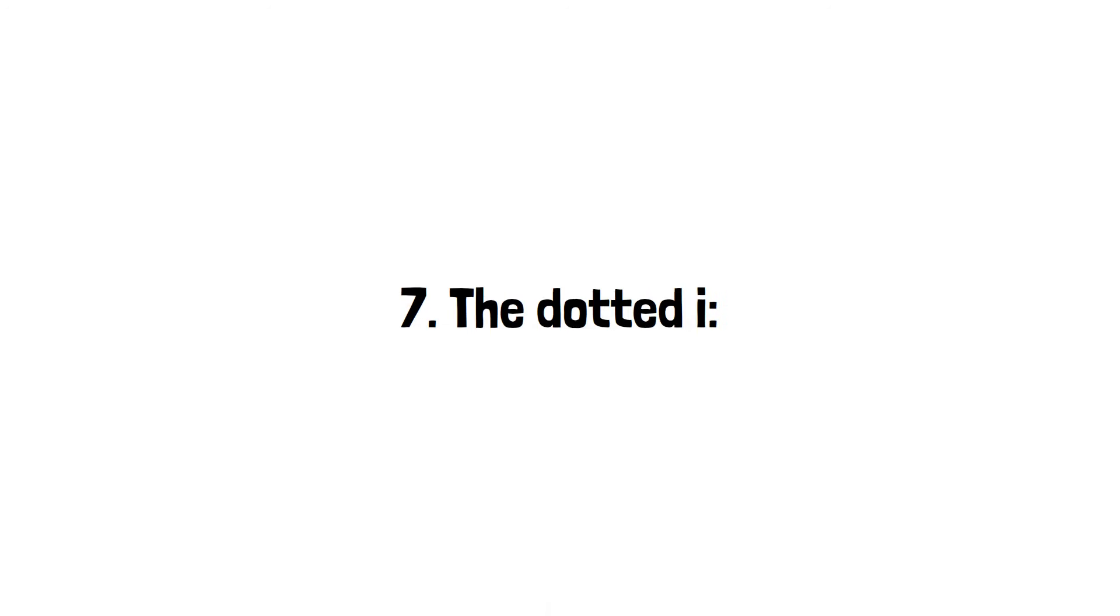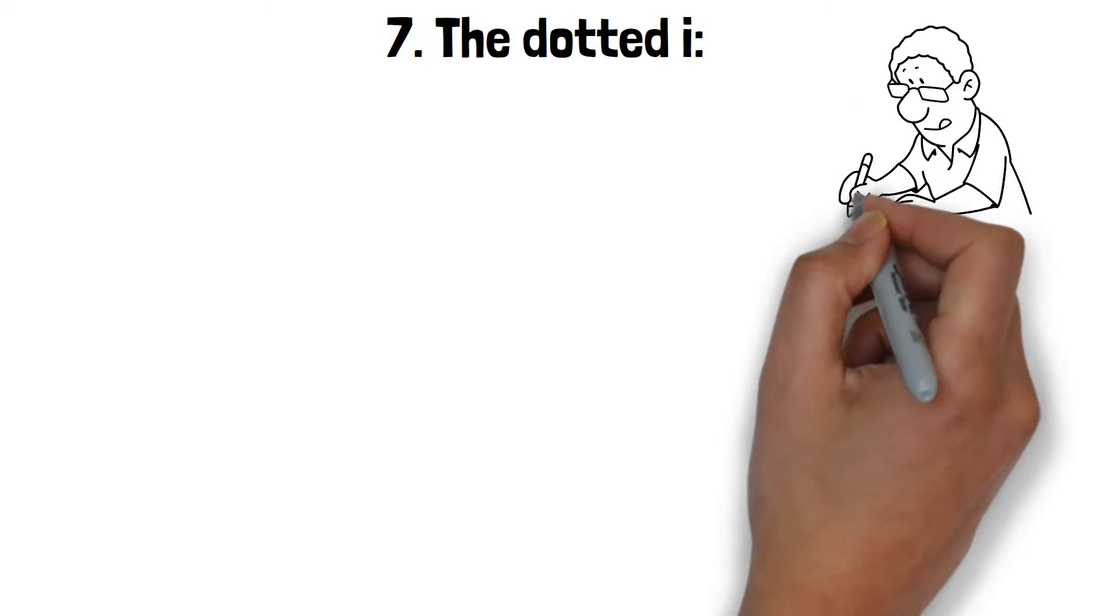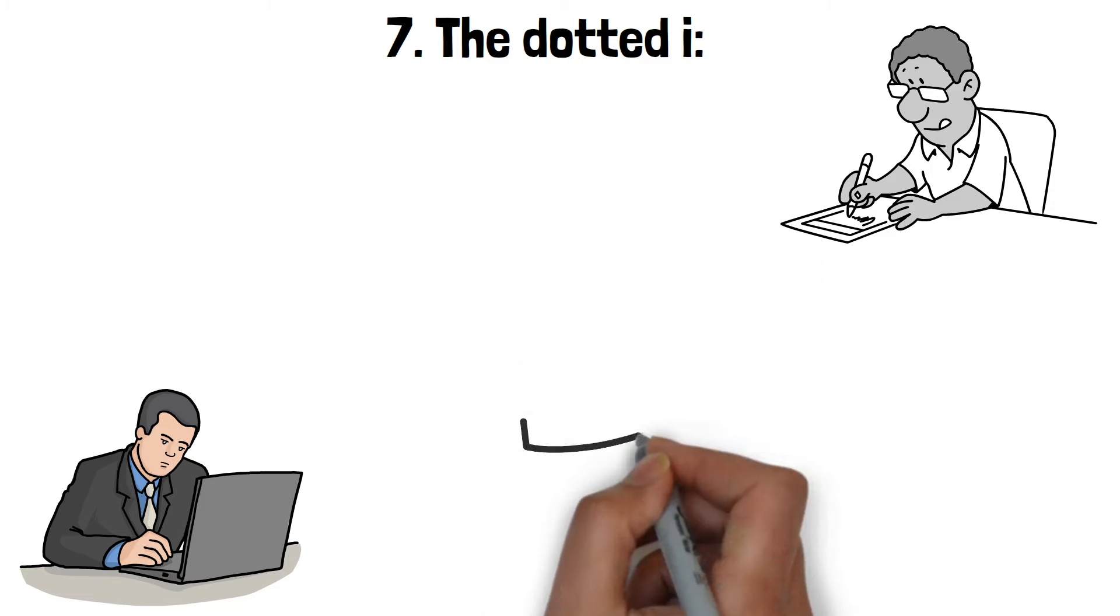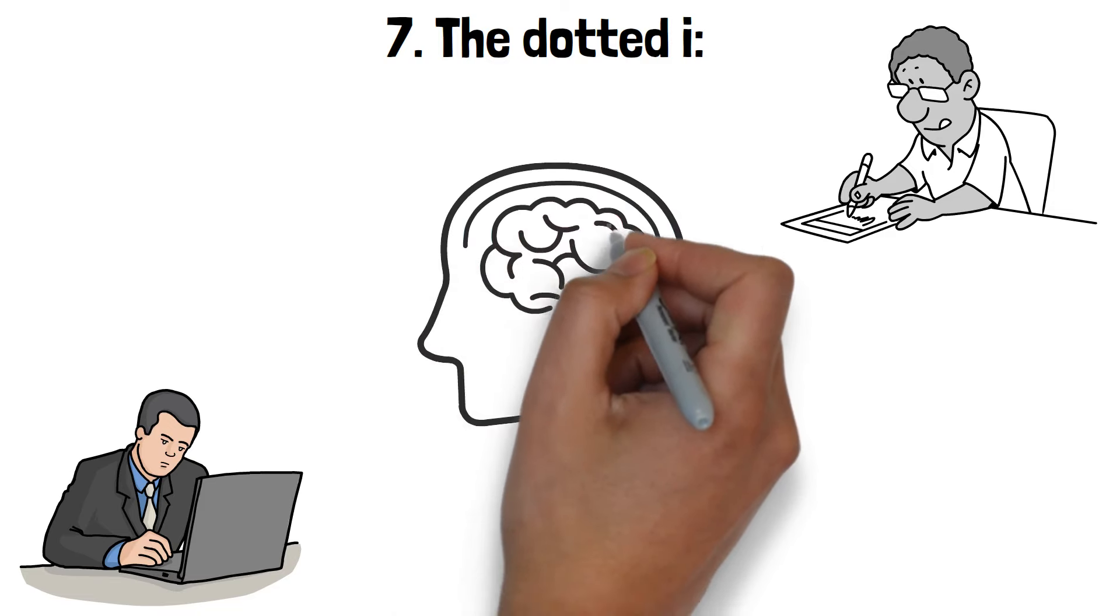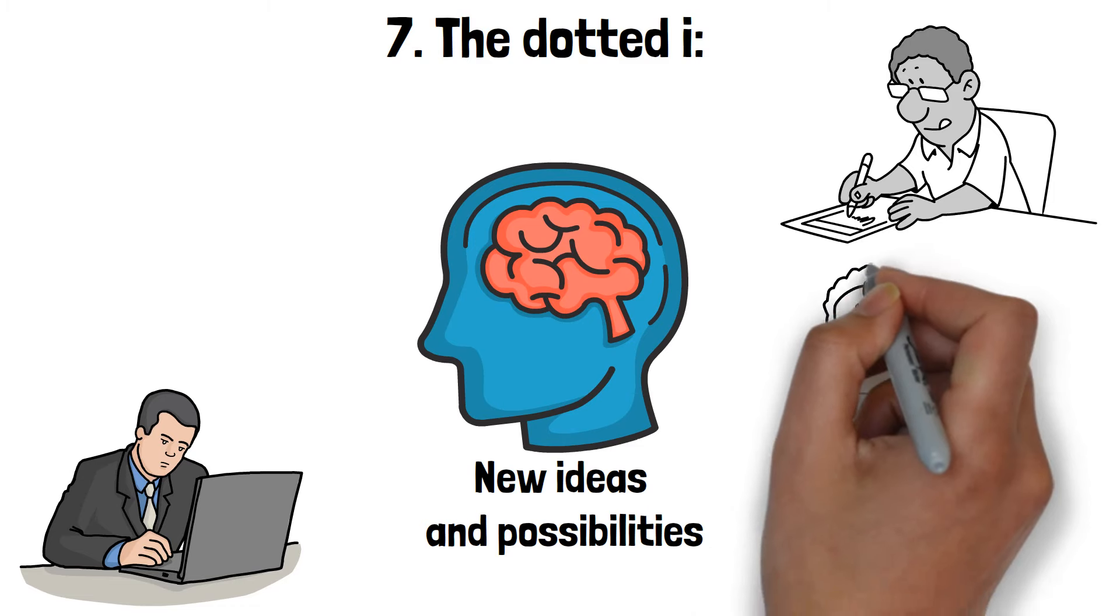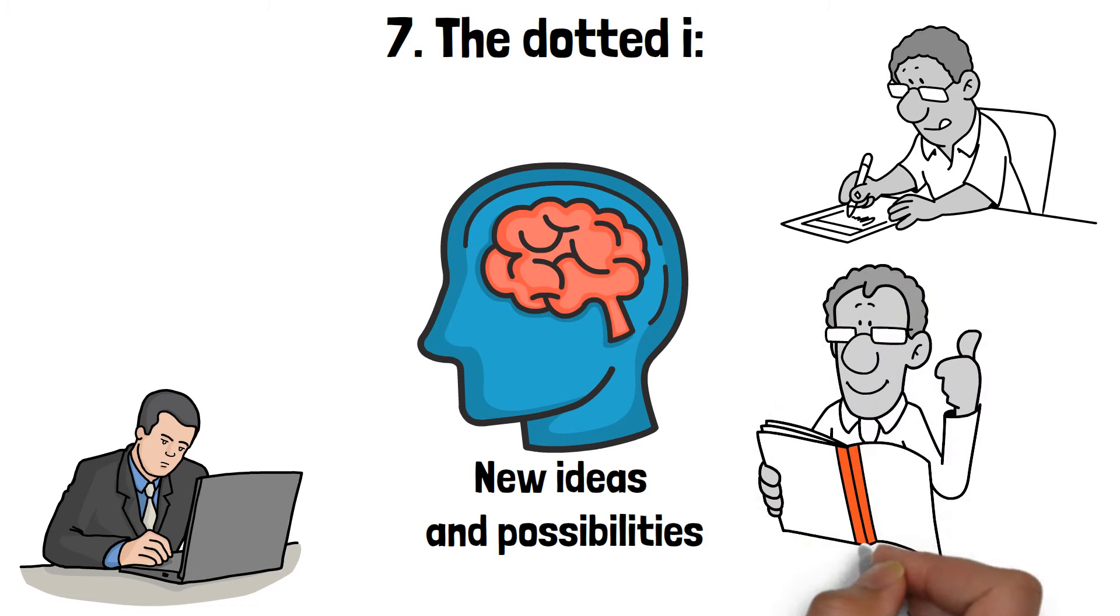The dotted I. Even the way you dot your I can provide significant insights into your personality. A high dot indicates imagination. If you tend to place the dot high above the letter, it suggests that you have a creative and visionary mind. You are likely to be someone who thinks outside the box and enjoys exploring new ideas and possibilities. This trait reflects a person who is inventive and has a rich imagination, always looking for new ways to express themselves.